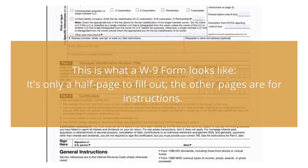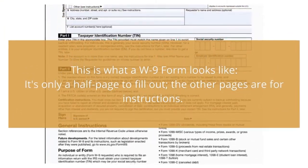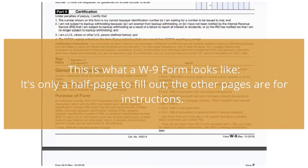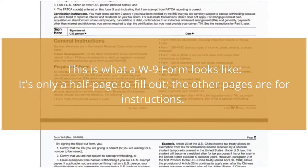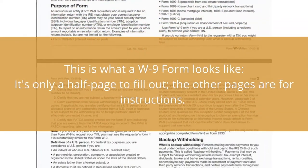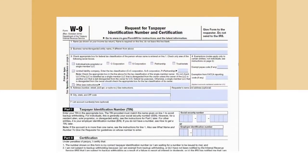This is what a W-9 form looks like. It's only a half page to fill out — the other pages are for instructions. As you can see on the top right corner, this form should be given to the requester, not the IRS.